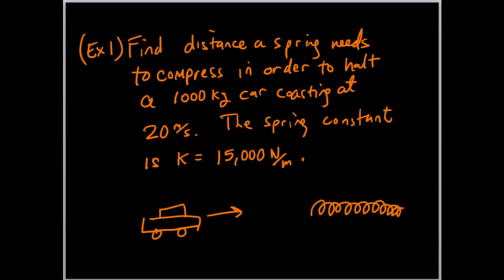Example one: we are asked to find the distance a spring is compressed in order to halt a 1000 kilogram car coasting, which means no braking, no gas, coasting at 20 meters per second. The spring constant is K equals 15,000 newtons per meter.